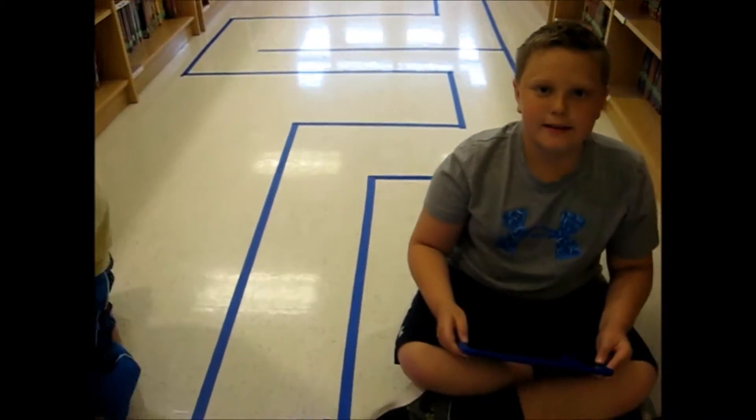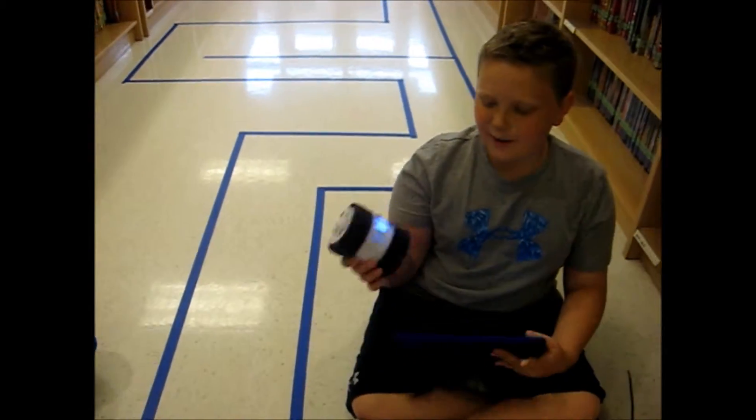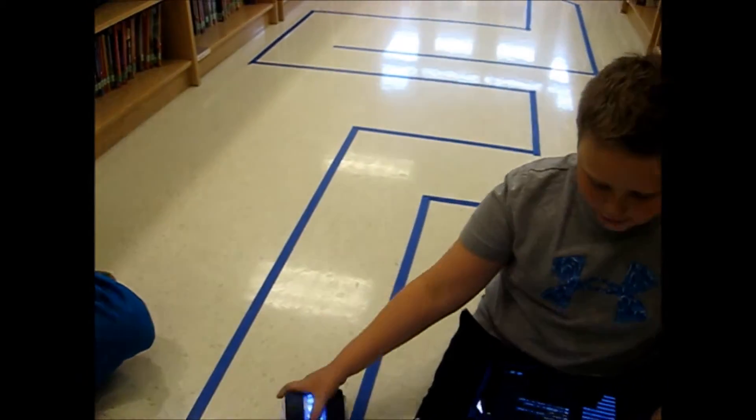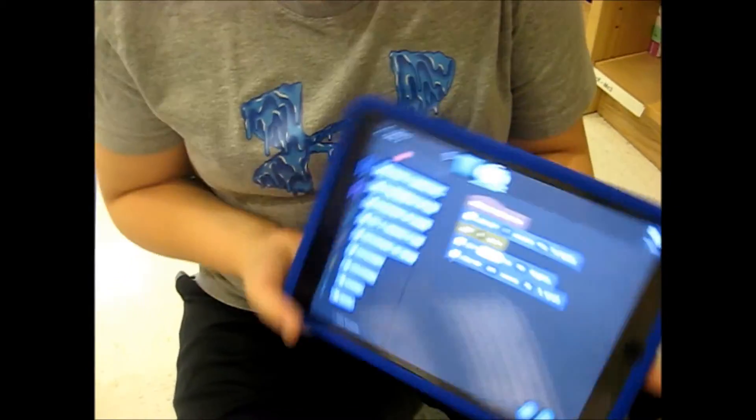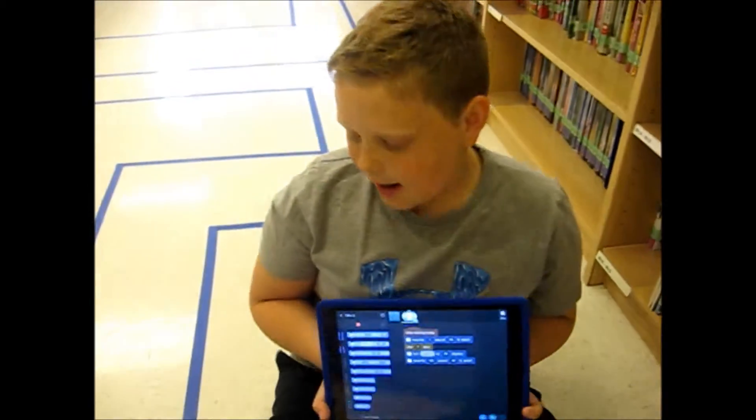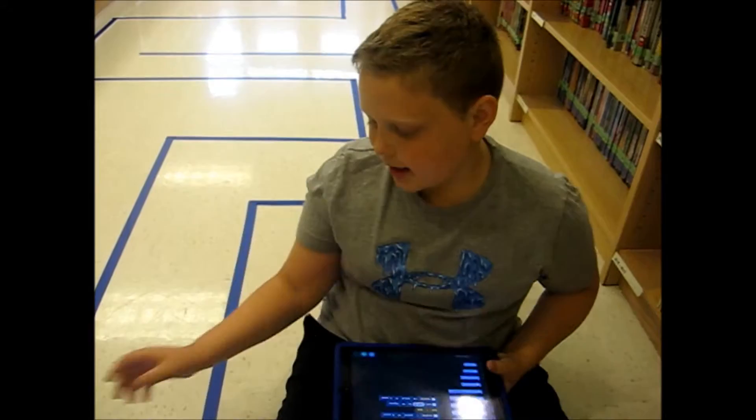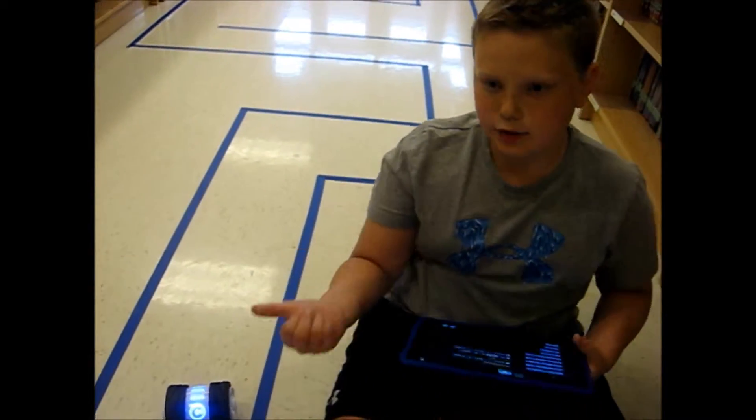Programming with Sphero Ollie. All right, Zach, tell us all about Ollie. So the Ollie is a robot with wheels, obviously, and it will move on its own if you give it a program with an app called Tickle, or you can use another app called Draw and Drive, or the actual Ollie app itself that will allow you to actually control it.